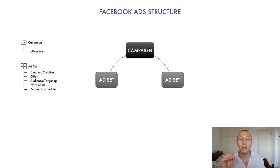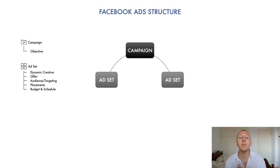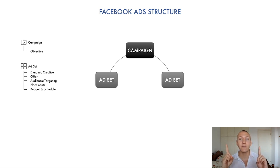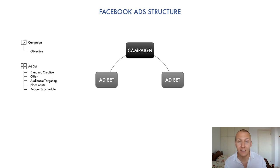Once you've selected your campaign objective, say traffic, you can inside that campaign create as many ad sets as you want. Each ad set will have a different audience and a different budget. For example, if you create one ad set with a five dollar budget and another with a five dollar budget, you're spending ten dollars total. But all of those ad sets will be focused on driving traffic because they live in that campaign.